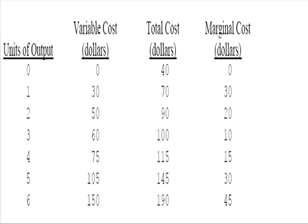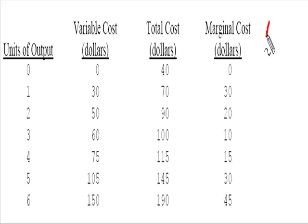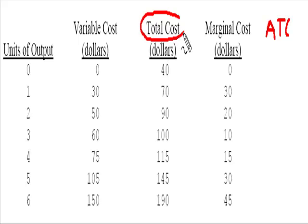In this table, let's try to identify the level of output where average total cost is at its minimum. In order to calculate average total cost, we'll go ahead and draw in another table. We need to take the total cost and divide it by the units of production.